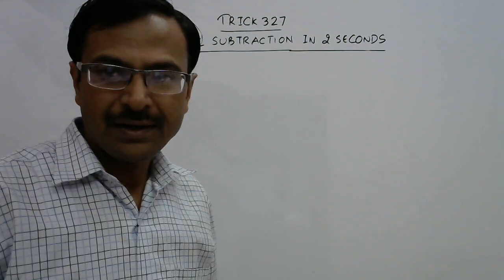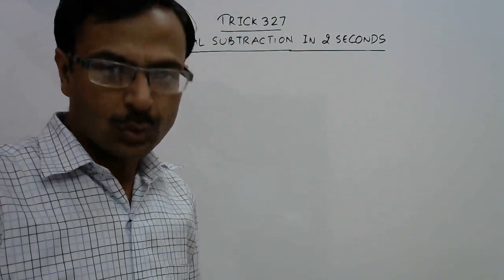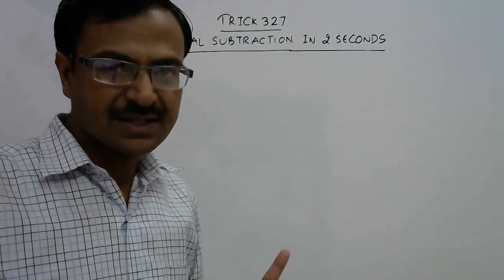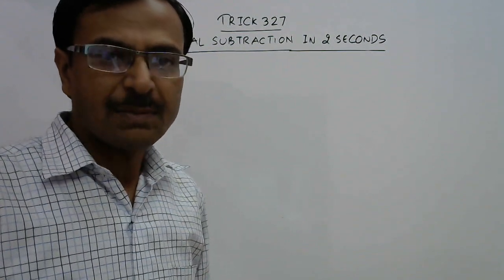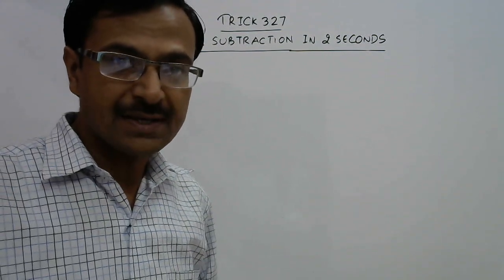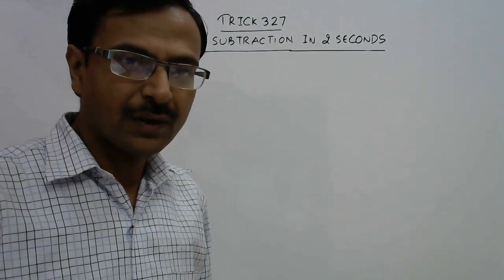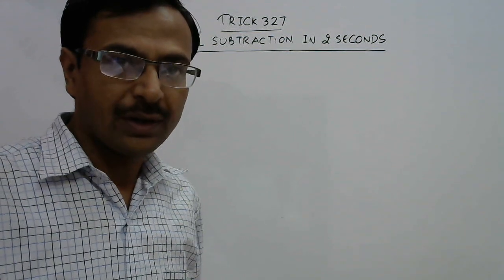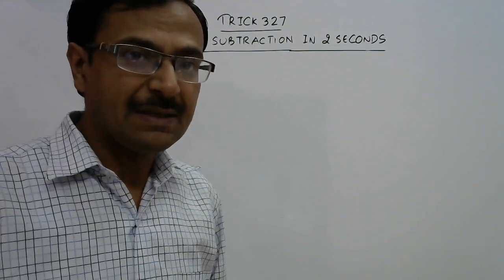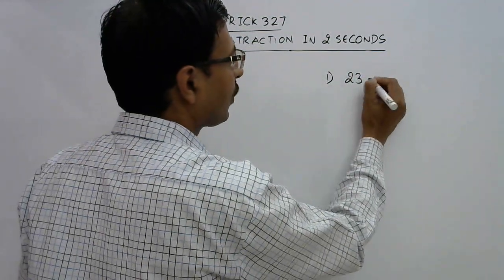Hello dear students. In trick number 327, I am going to tell you a technique through which you will be able to subtract numbers orally within just two seconds. This subtraction technique is especially for numbers which are close to base quantities — like 19 is close to 20, 38 is close to 40, 98 is close to 100, and so on. If you encounter numbers like this, then subtraction can be very easy. Let us take an example in which we have to subtract 9 from 23.